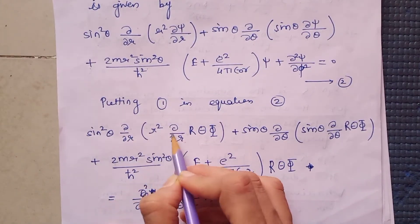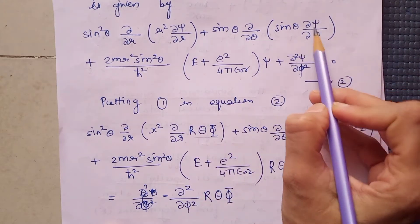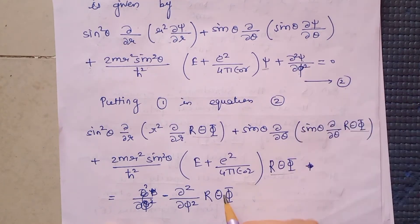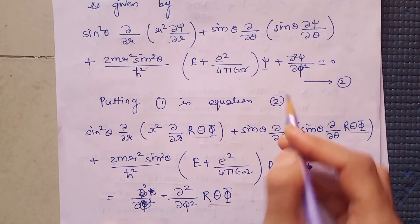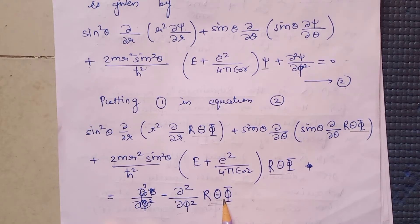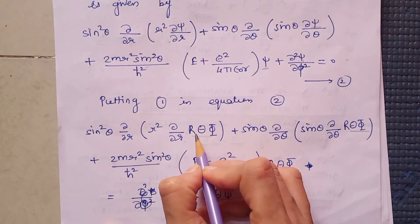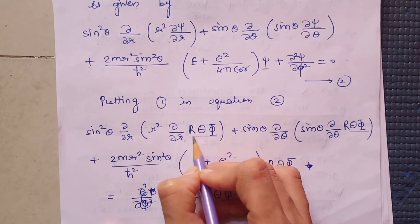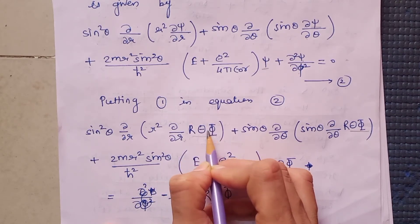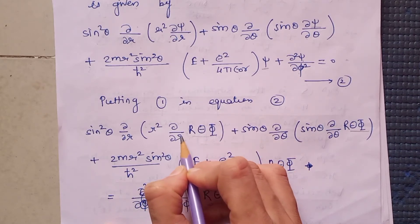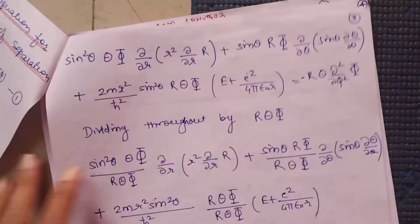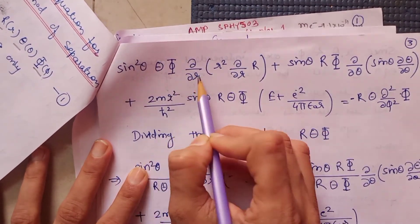We substitute the value of ψ as R·Θ·Φ into Schrödinger's equation. When differentiating with respect to r, we can treat Θ and Φ as constants and take them outside the differentiation. Similarly, when differentiating with respect to θ, R and Φ are taken outside; when differentiating with respect to φ, R and Θ are taken outside.